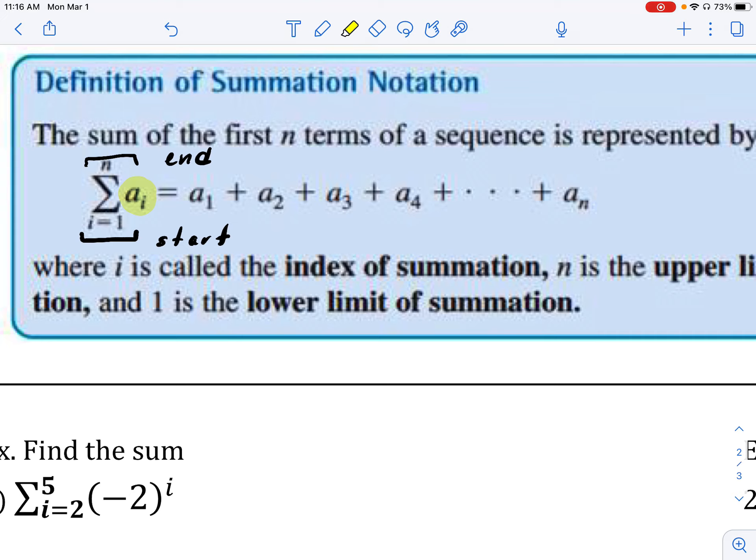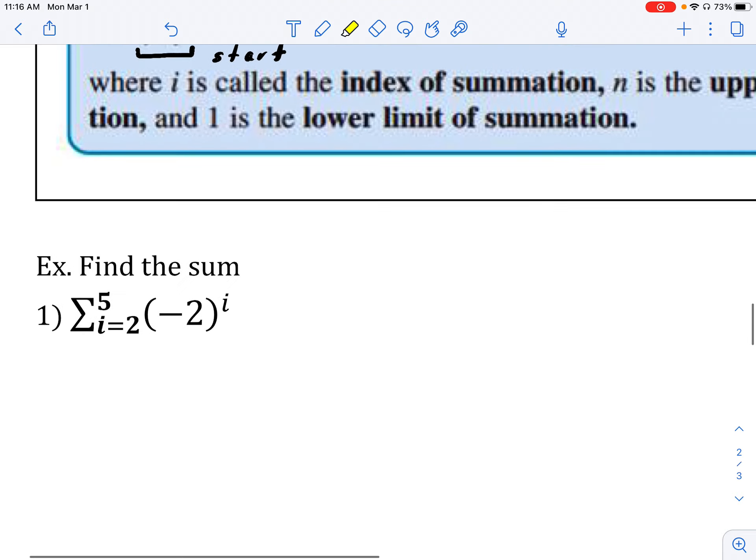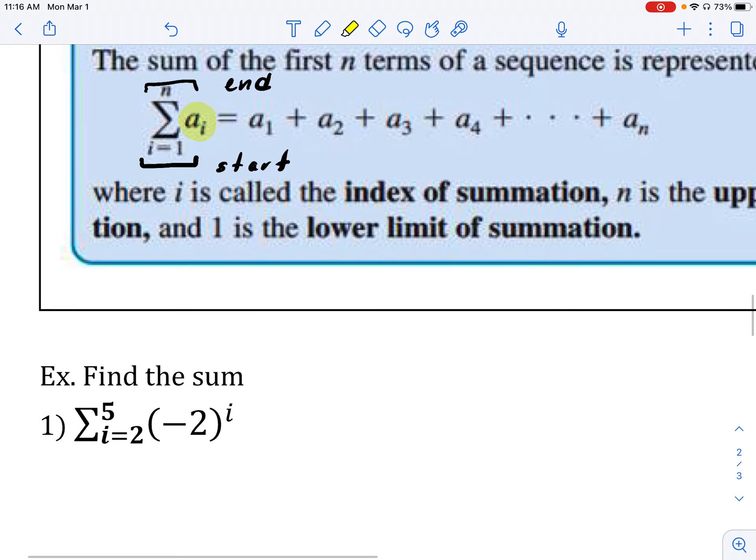So what summation notation does is it allows us a very efficient way of expressing what's going on with our series. So if we're looking at this first example here, and I asked you to find the sum, let's just translate what's being said here in this summation notation into English so we can understand it a little bit better. We're saying we're going to add up, starting with the second term in our series, all the way up until our fifth term. We're going to add the second all the way up until the fifth term of our series that is generated by this rule.